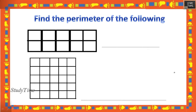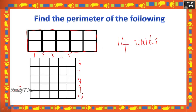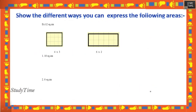What is the perimeter of the following shapes? For perimeter, count the outer boundary. For the first shape, counting the outer edges: 1, 2, 3 … 14 — so the perimeter is 14 units. For the second shape, counting gives 10 + 10 = 20 units. For perimeter, write the answer directly as units or centimeters, as applicable.